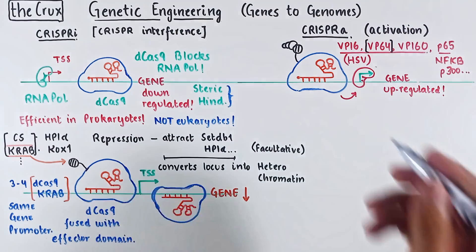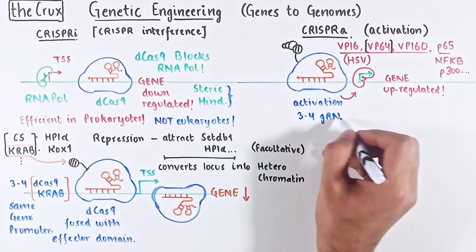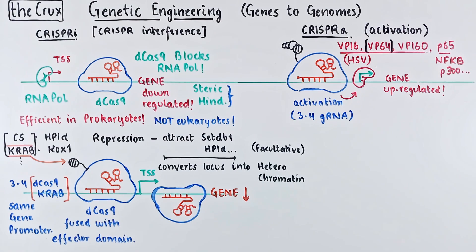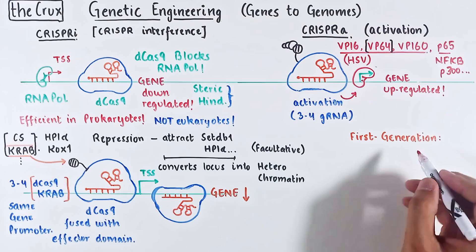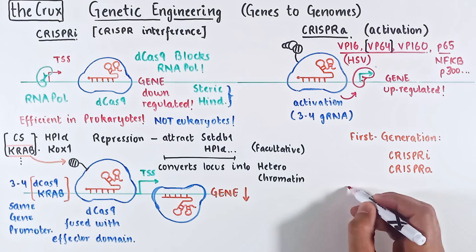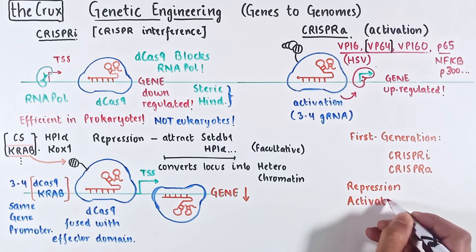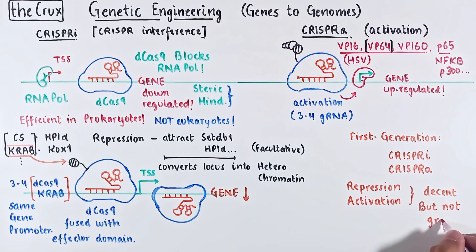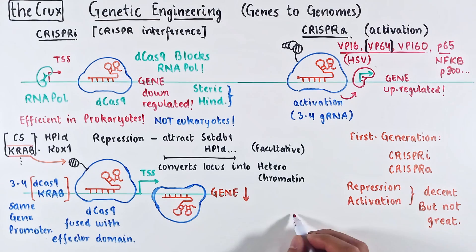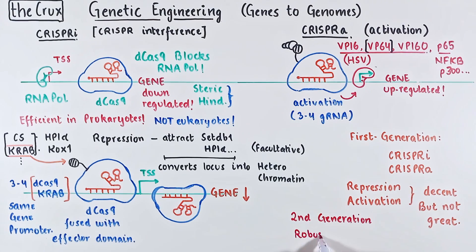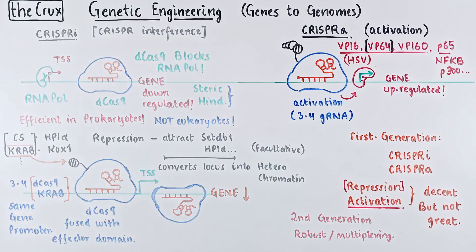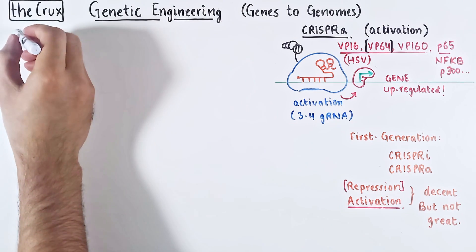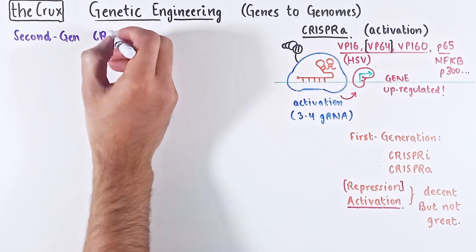Similar to CRISPR interference, you can also guide multiple dCas9s to the same promoter to increase expression output. What we have just discussed are the first iterations of CRISPR-I and CRISPR-A. Their repression and activation potential is decent but not great. So a second generation of CRISPR-I and CRISPR-A was built for more robust and multiplexed usage. Repression was usually fine in first-gen methods, but most of the issues were in CRISPR-A, so the second generation was primarily focused on CRISPR-A developments. As you will see, these improvements can be used for CRISPR-I as well.